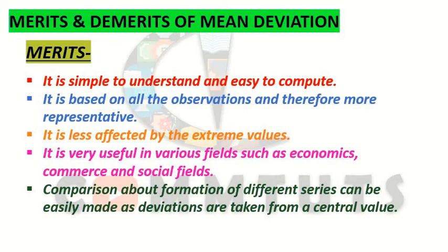Listen carefully — every method has its own merits and its own demerits. Whenever we study the merits and demerits of any topic, especially in statistics when you are given methods like measure of dispersion — which has four methods: range, quartile deviation, mean deviation, and standard deviation — the merits and demerits will make sense when you know their exact meaning and study them comparatively.